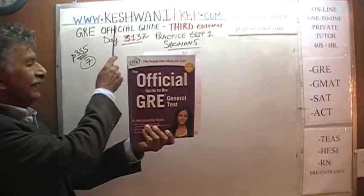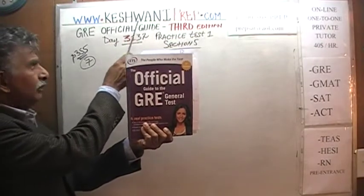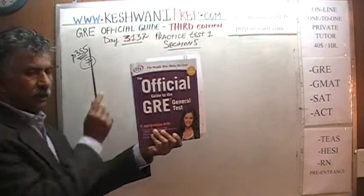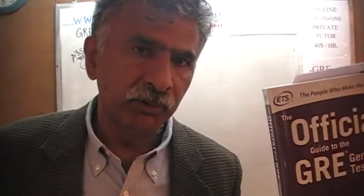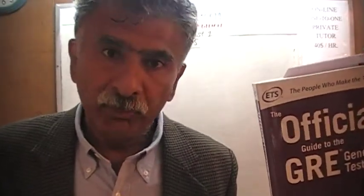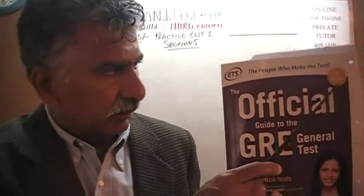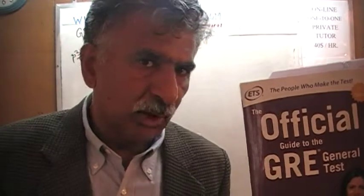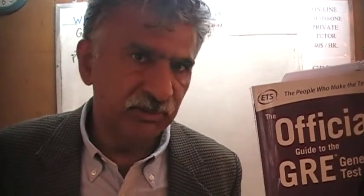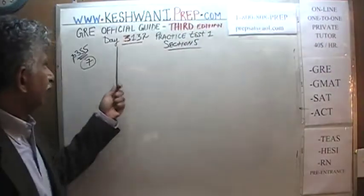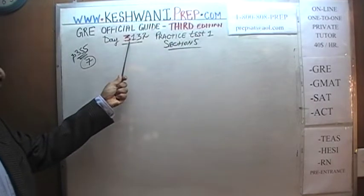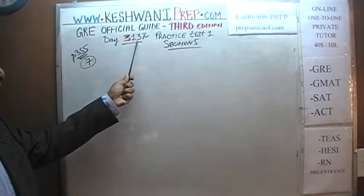Hello. My name is Keshwani — that's K-E-S-H-W-A-N-I. We are here because we want to prepare for the GRE. We have been solving math problems out of this book, the Official Guide to the GRE, the third edition. If you do not own this book already, purchase one immediately — you're going to need it. Today is our lesson number 132, day 3132, where 3 signifies the third edition.